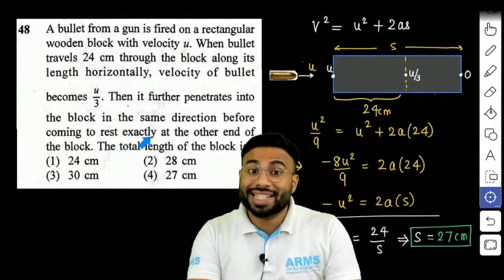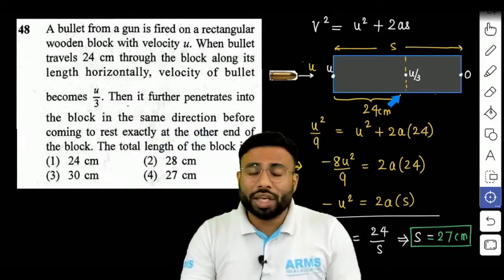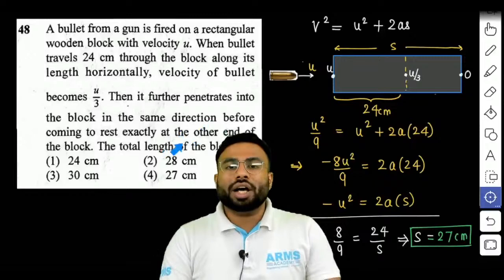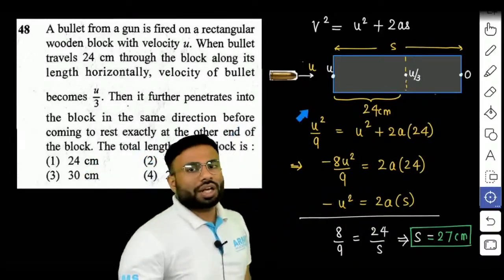और rest पर कहां पर आता है, exactly at the end of other block बत्ब ब्लॉक की दूसरे end पर जाकर velocity कितना हो जा रहा है, 0 तो हमें पूछ रहा है, इस block का total length कितना होगा यह हमें option दिया